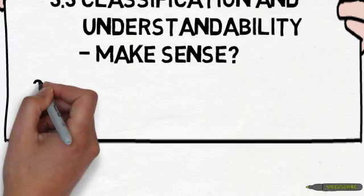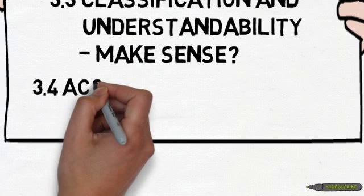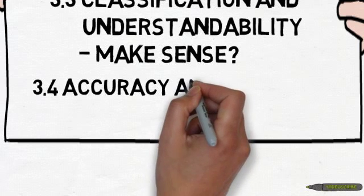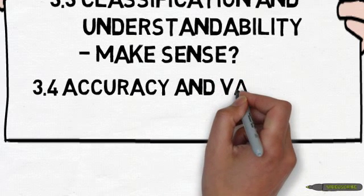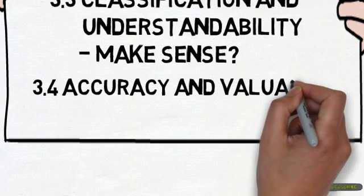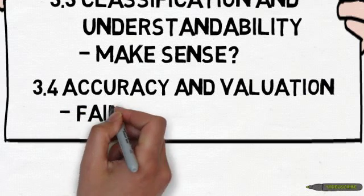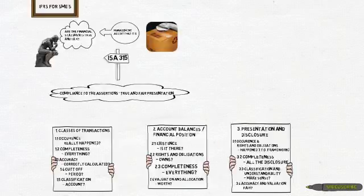And then lastly, accuracy and valuation: financial or non-financial information is disclosed in the financial statements fairly. This explains the assertions and their applicability to the audit. Once we delve into specific sections, we will unpack this in more detail.